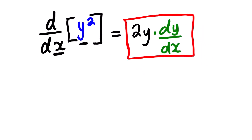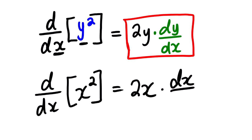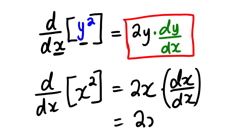Now let us look at the derivative of x squared with respect to x. We are going to have 2x multiplied by dx over dx. Now we all know that any term divided by itself is equal to 1. So dx over dx equals 1, and 1 multiplied by 2x gives us only 2x.